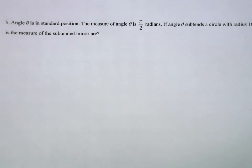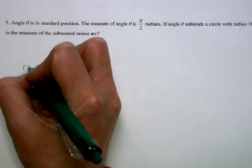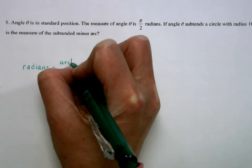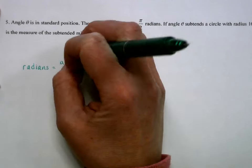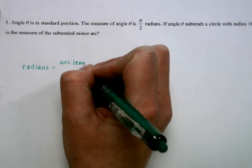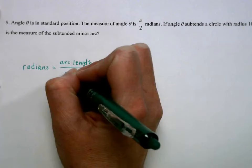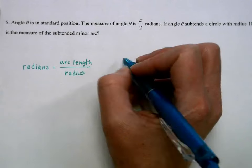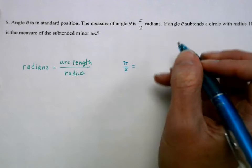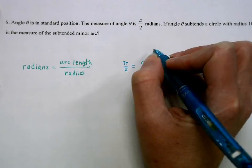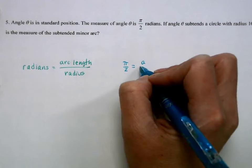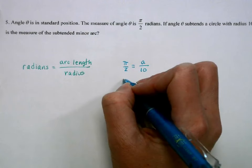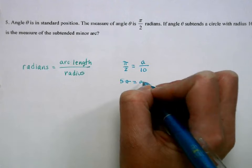Radians equals arc length divided by the radius. In this scenario, I have the radian measure and the radius, so I'm solving for arc length (a). Multiplying both sides by 10 gives 5π = a, so my arc length is 5π.